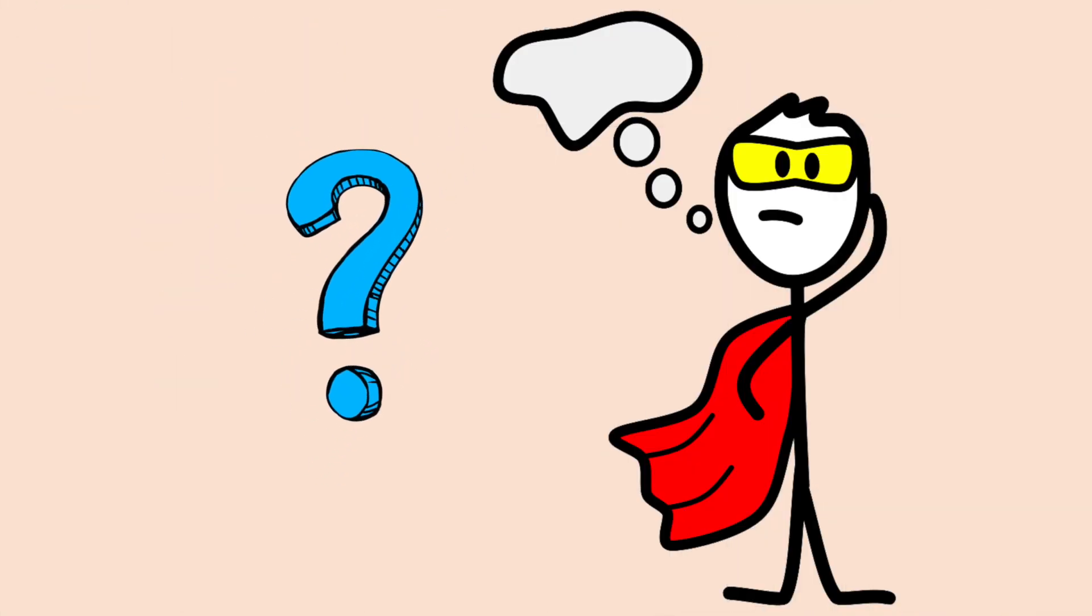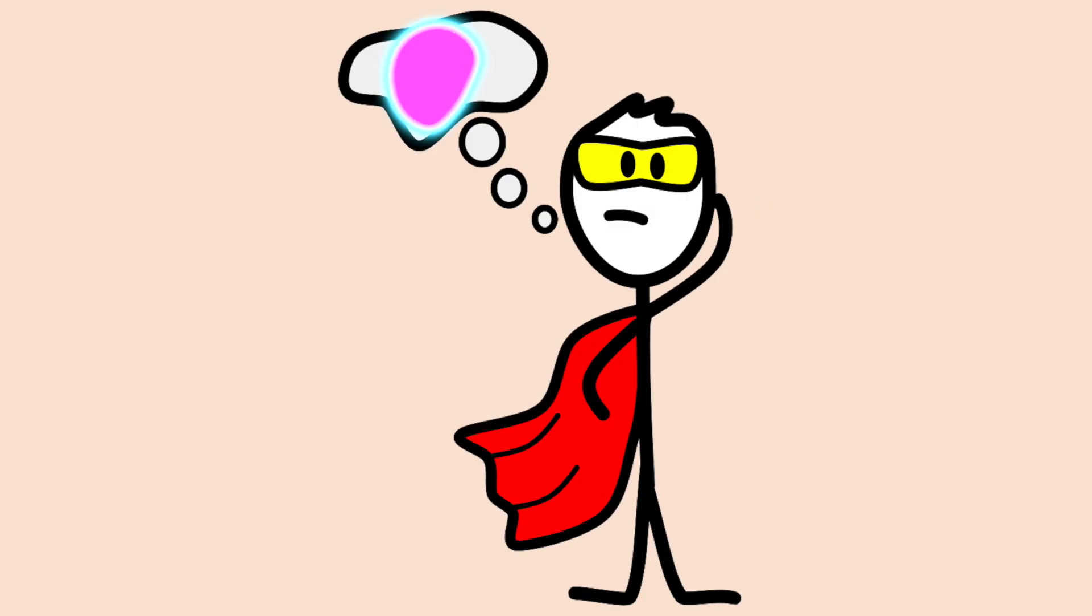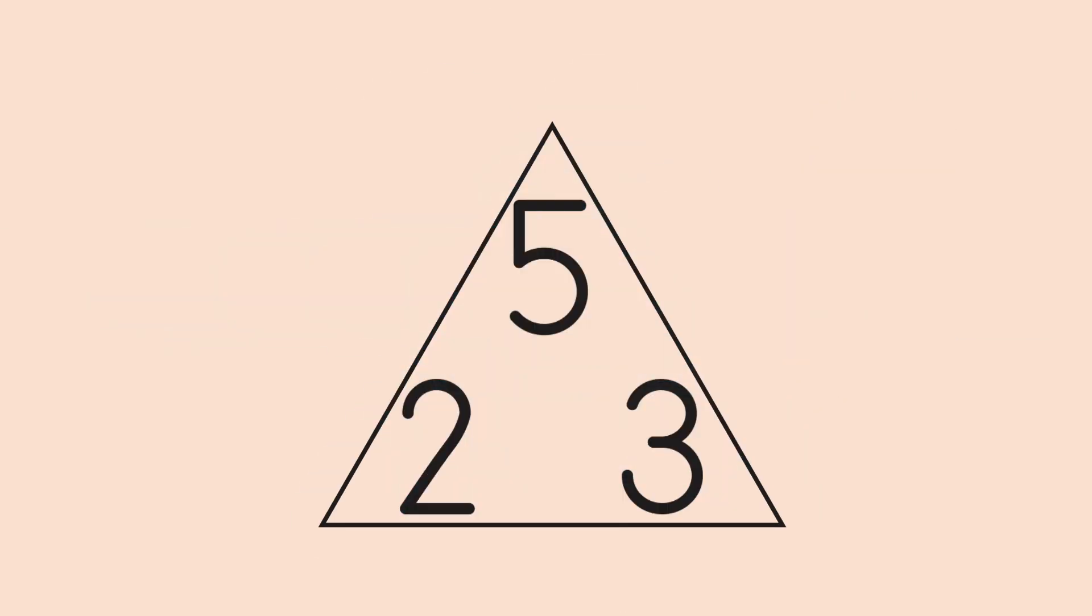But is there something that people can see that can help them figure the facts out, he wondered? Super Math Person thought really hard and realized that there sure is: a fact family triangle. Super Math Person drew a triangle. Then he took the largest number and put it in the top, and the other two numbers and put them on the bottom.